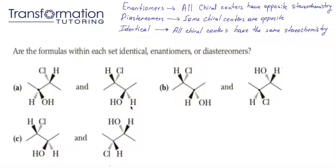Diastereomers have some chiral centers that are opposite and some chiral centers that are the same. Therefore, in order for diastereomers to exist, the molecule must have at least two chiral centers. If it doesn't, it's either an enantiomer or an identical molecule.